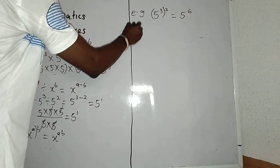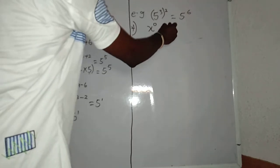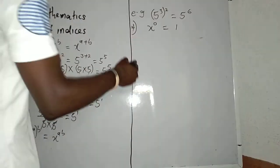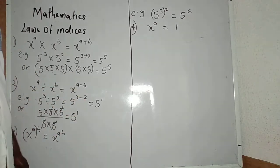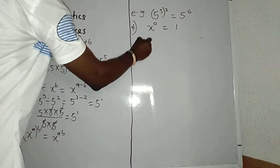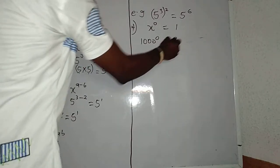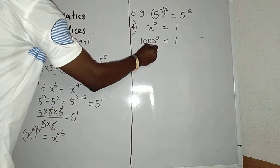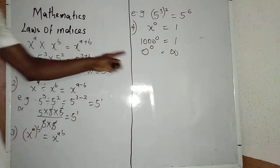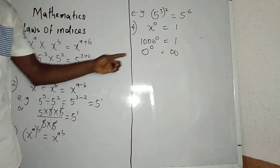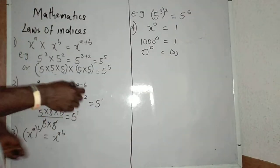Law 4: If I have x raised to power 0, it will be equal to 1. Any number raised to power 0 is equal to 1. For instance, if I have 100 raised to power 0, my answer is 1. Please note that 0 is a number — it is a neutral number, and we call it the additive identity. This is very important.